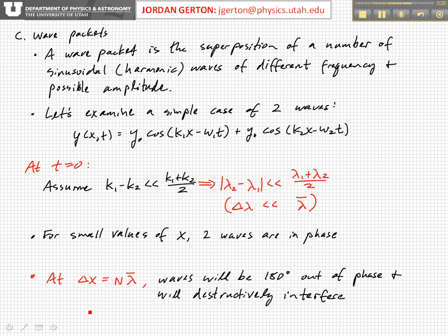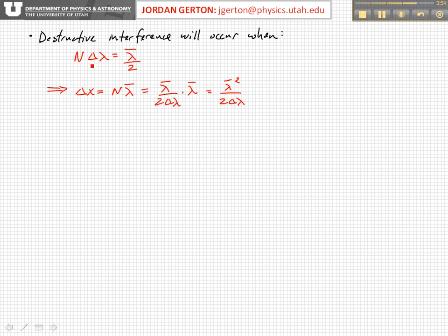The condition for this destructive interference, actually, is that this particular number of wavelengths, average wavelengths, times the difference in the two wavelengths, okay, is equal to a multiple.